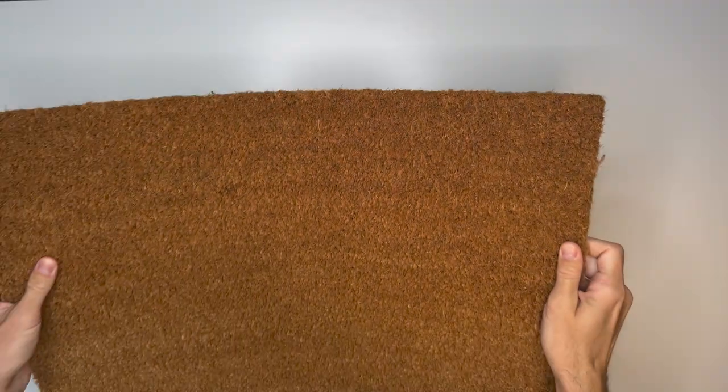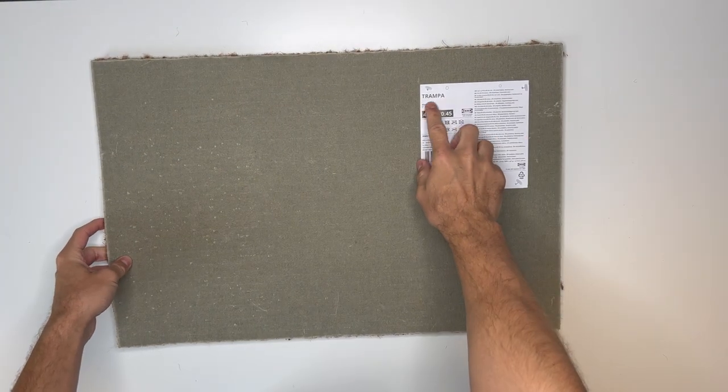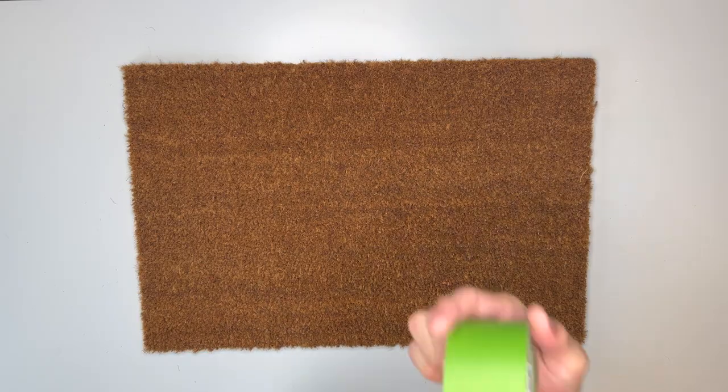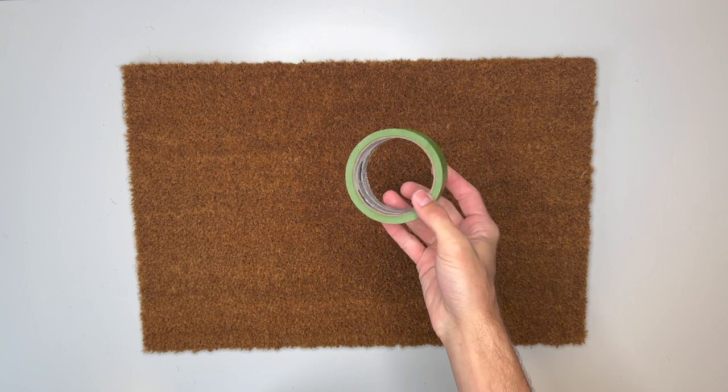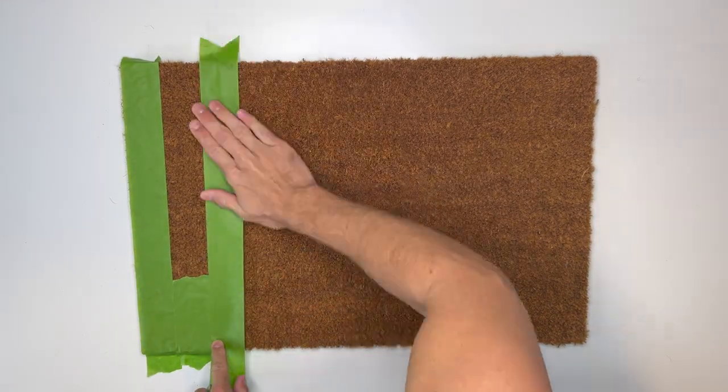For our fifth and final IKEA hack, we're going to create our very own DIY floor mat. I love that IKEA has these blank Trampo mats. They're only $8.99 and there are endless possibilities of what you can create on these. I'm taking some Frog Tape to create a checkered pattern on my floor mat.